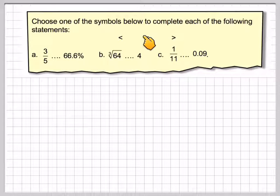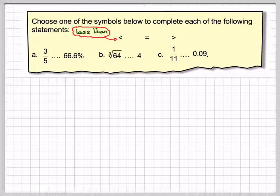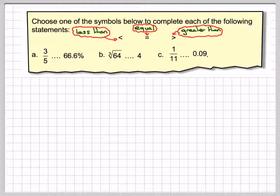Choose one of the symbols below to complete each of the following statements. We've got this symbol which means less than, this symbol which means equal to, and this symbol which means greater than. We've got to decide what symbol to put in with 3/5 and 66.6%, the cube root of 64 and 4, and 1/11 and 0.09. Let's take part a.